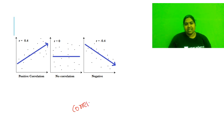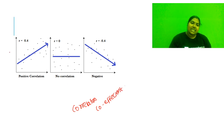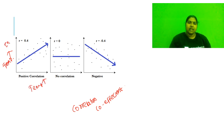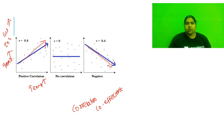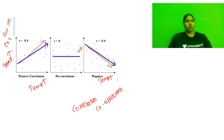Correlation coefficient: for example, if you increase temperature and plot enzyme activity - if activity rises with temperature, that is a positive correlation. If enzyme activity suddenly goes down when temperature rises, that is a negative correlation. If the dots are scattered everywhere with no pattern, that is no correlation.